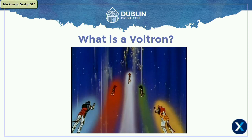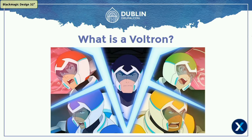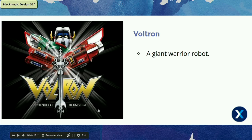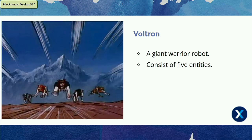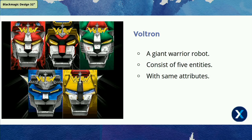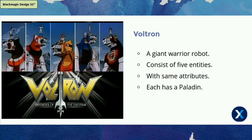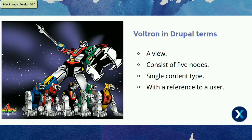Voltron consists of five lions, which are also robots, controlled by their pilots called paladins. From a developer's point of view, Voltron is a giant warrior robot consisting of five different lions. The lions are the same but have different qualities — one lion is for the core of Voltron, two are for the hands, and the remaining two are for the feet. They all have paladins as well, which are the pilots who control Voltron.